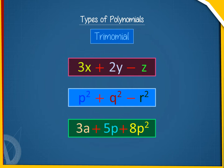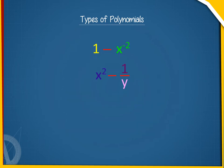Expressions containing terms more than one are called polynomials. No polynomial can have negative powers of a variable in any of its terms, such as 1 - x raised to the power -2, x squared - 1/y.